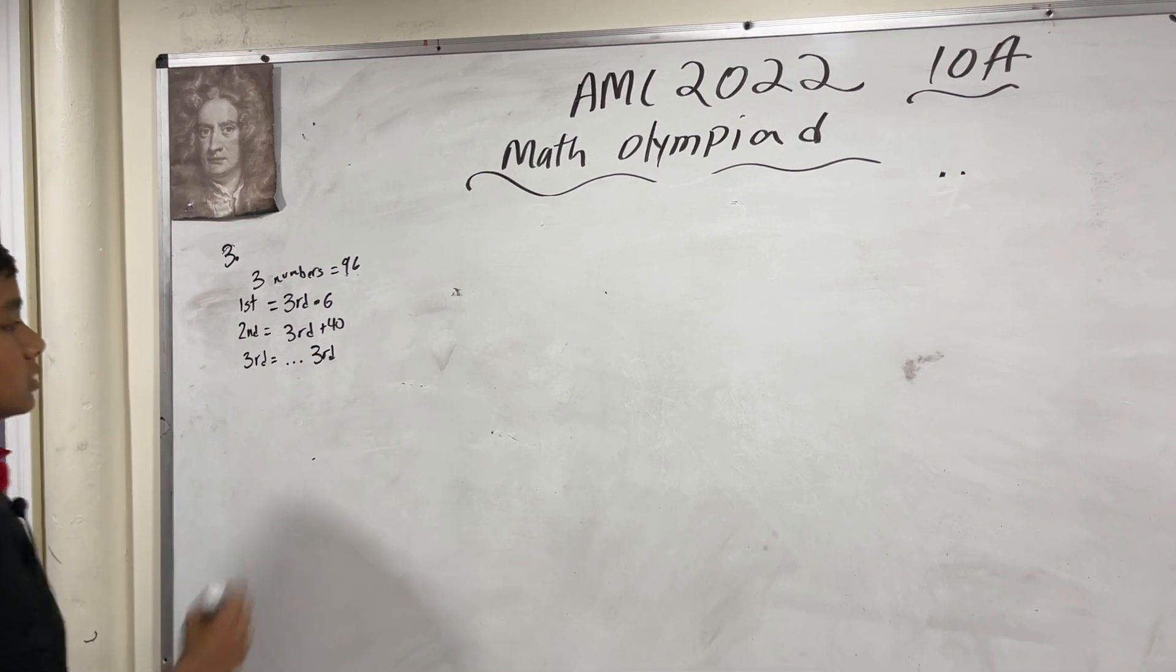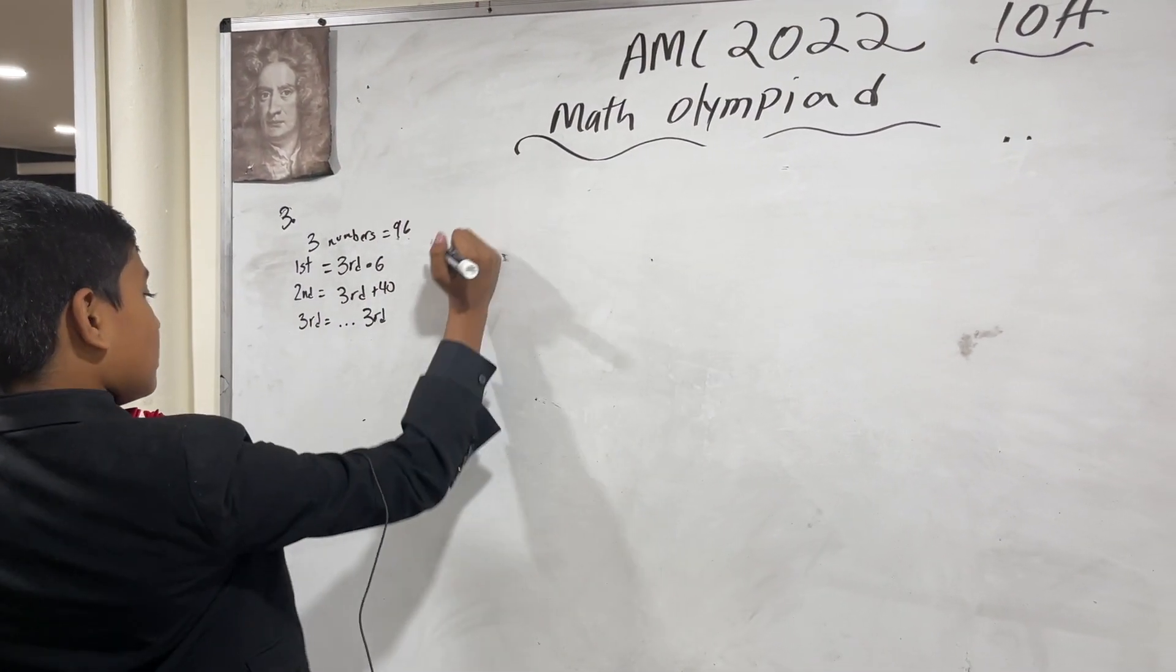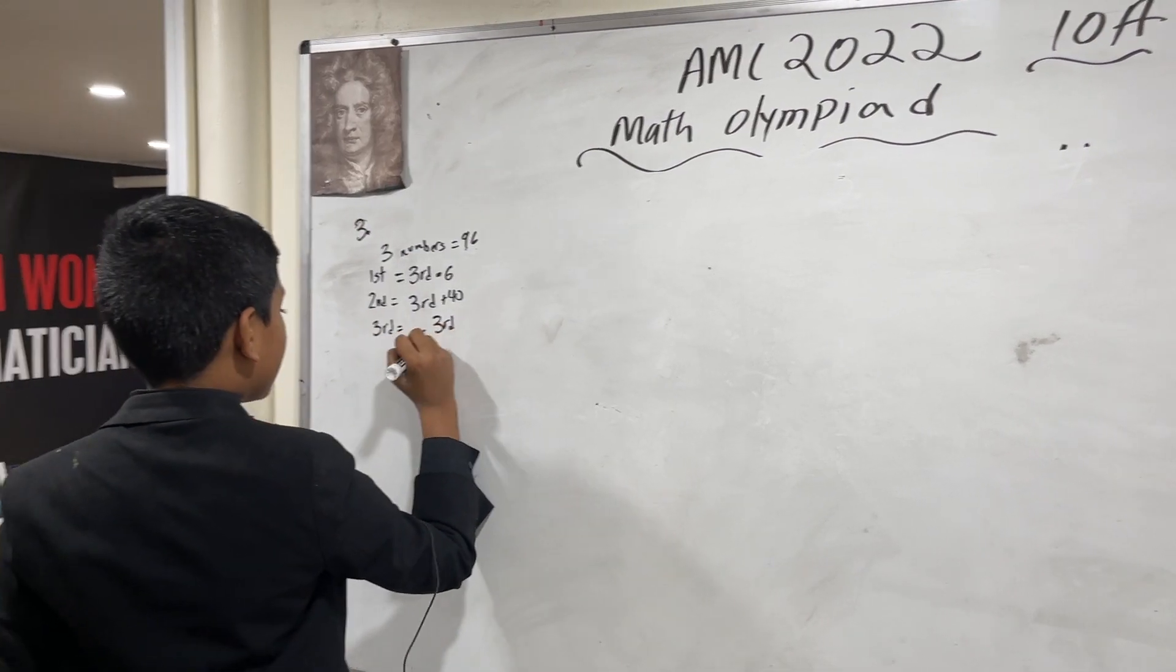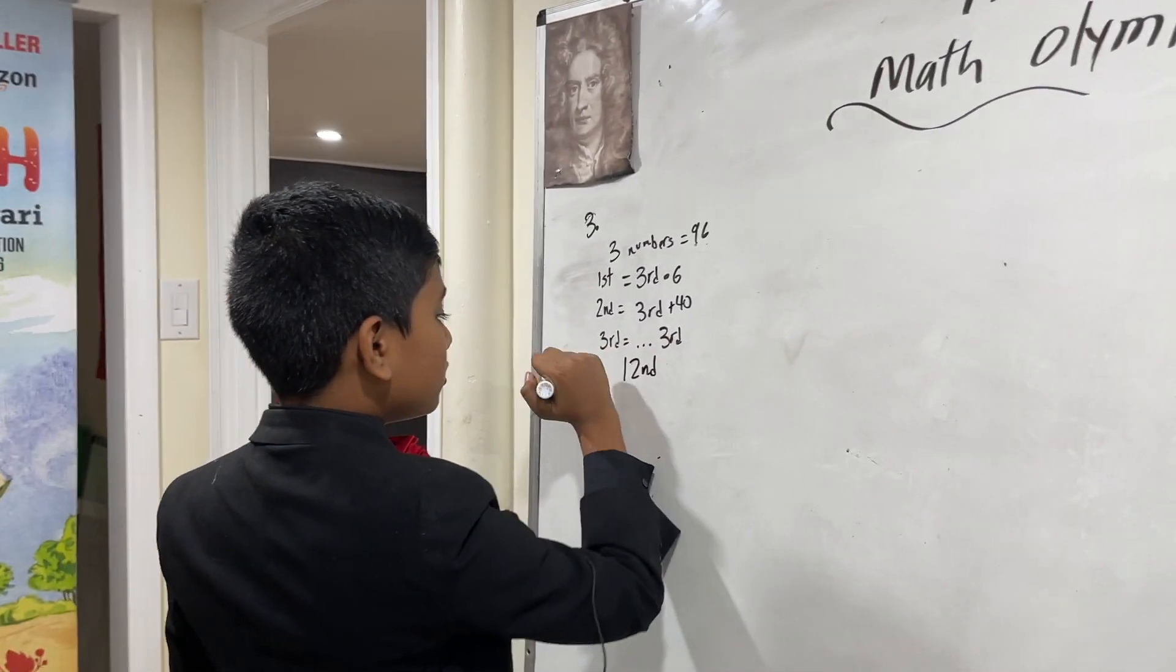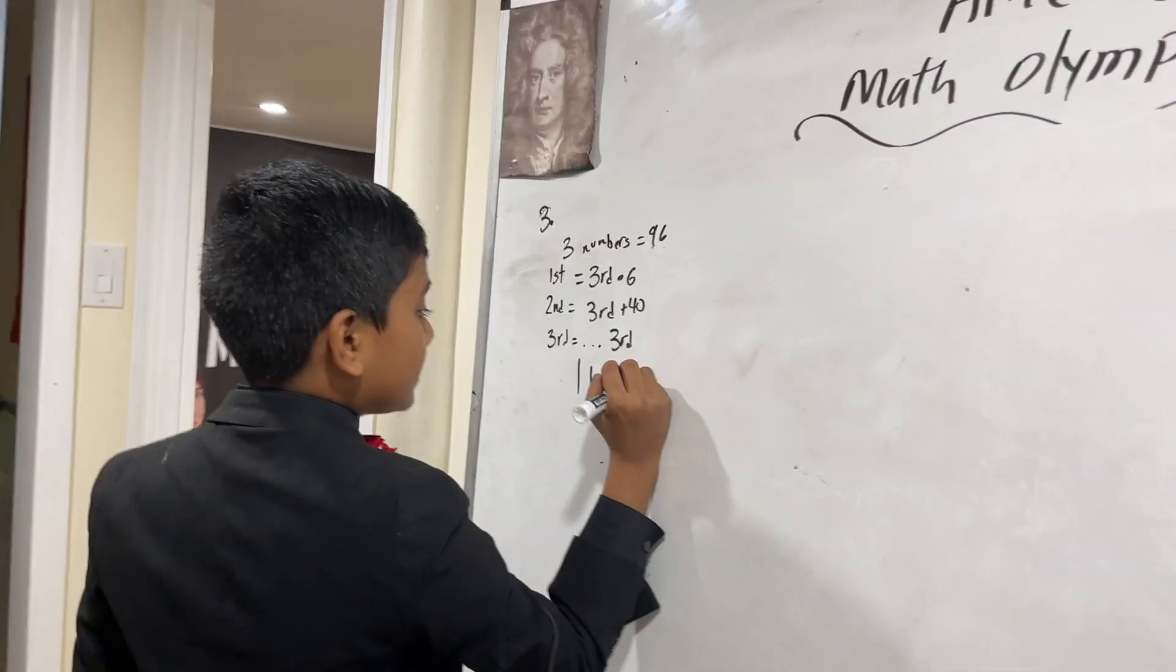The third number is the third number. So it's asking for the absolute value of the difference between the first and the second number.